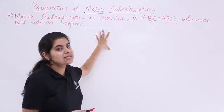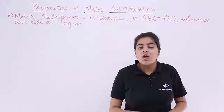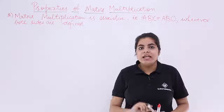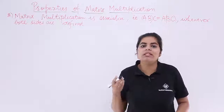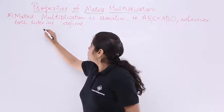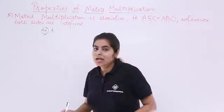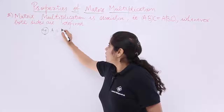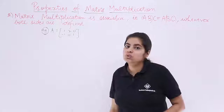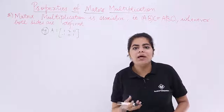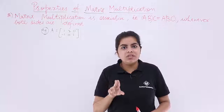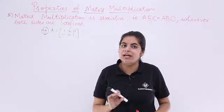Let's take three matrices to verify associativity. The first matrix A is: row 1 = [1, 2, 0] and row 2 = [−1, 0, 1]. Any matrices can be taken, but the only thing to consider is that on multiplication, the order and all conditions must be satisfied. The matrix B is: [1, 0, −1 / 2, 0, 3].